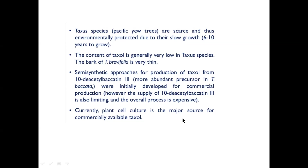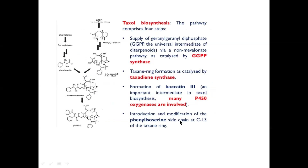Plant culture is presently the major source for Taxol production. The pathway of Taxol biosynthesis involves key enzymes: GGDPS — geranylgeranyl diphosphate synthase — taxadiene synthase, and oxygenases. These are the most important enzymes, and each enzyme has its own precursor.